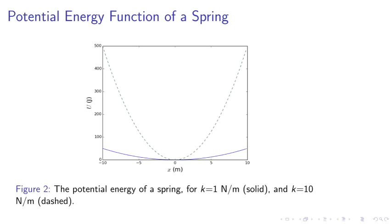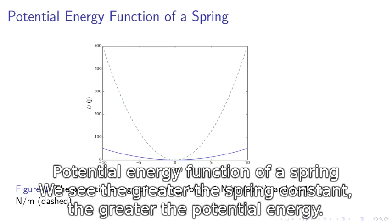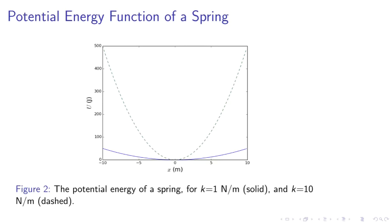Potential energy function of the spring. Here in figure 2, we've plotted different potential energies for k equals 1 newton per meter (solid) and k equals 10 newton per meter (dashed). We see that the greater the spring constant, the greater the potential energy for a given displacement.